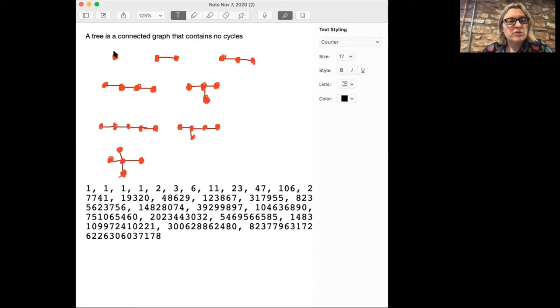Here's the tree with one vertex. There's only one of them. Here's the tree with two vertices, only one of those. Here's the tree with three vertices, only one of those. So far we're just getting paths. Here's the first tree with four vertices, but finally we get a tree which is not a path but has four vertices. Then there are three trees with five vertices, which I've drawn here.